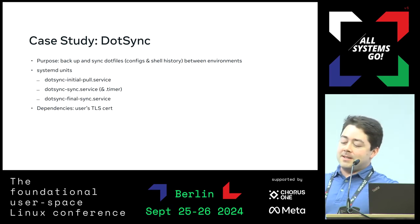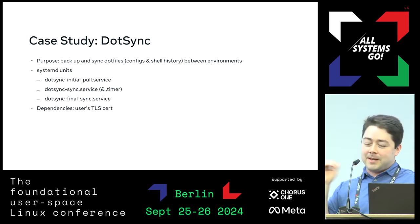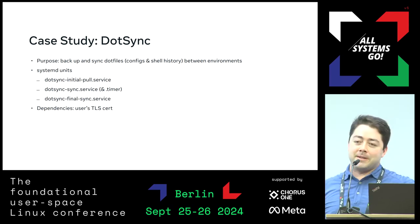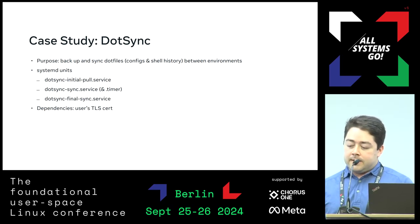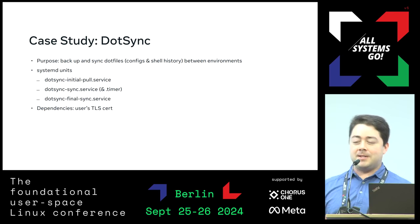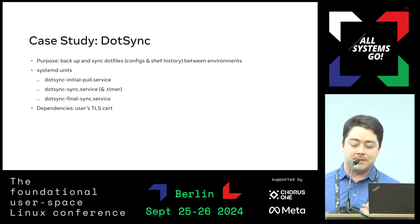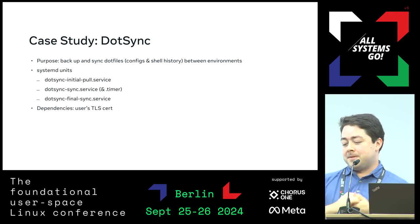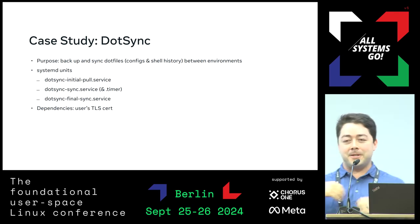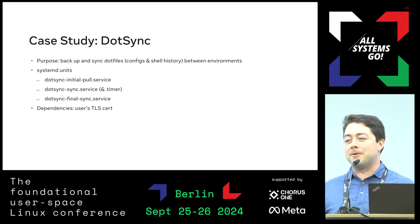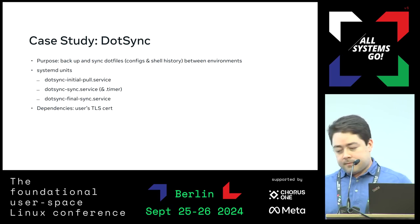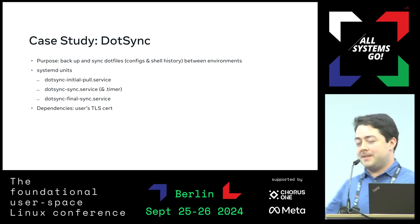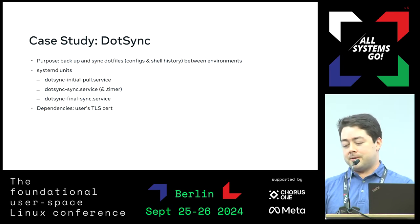Dot.sync is implemented with several different systemd services and timers. We have a service that does the initial downloading of your files. Then we have a service that runs periodically to synchronize them — pushing up any changes you've made on that machine as well as pulling down any changes you've made on other machines. And we have a service we want to run right at the end to do a final backup, to make sure we don't lose any commands you ran right before you got rid of your machine. This service also depends on having the cert identifying the user on the machine.